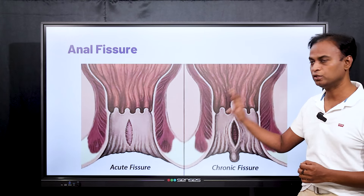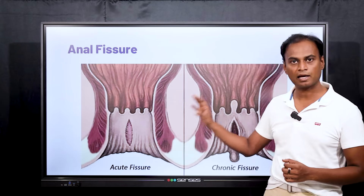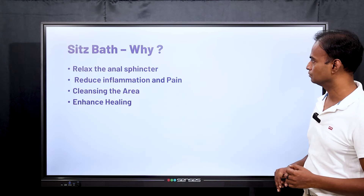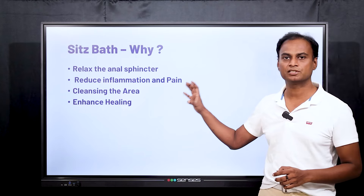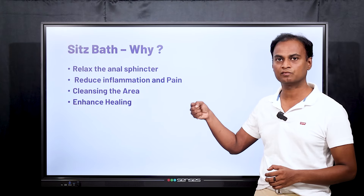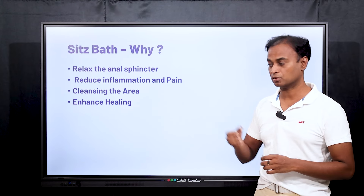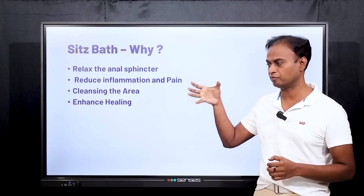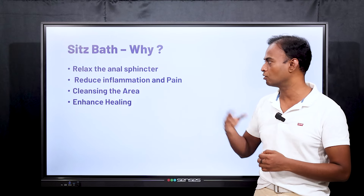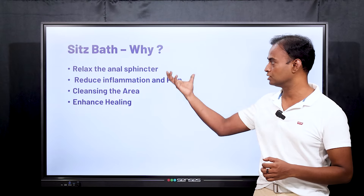Now we will look into why we take a sitz bath and what is the proper way of taking it for anal fissure. The first reason is that there will be spasm and contraction of the anal sphincter. To relax that sphincter, you take the sitz bath. Once you relax that sphincter, pain is relieved and healing is promoted. That is the reason the sitz bath is used.